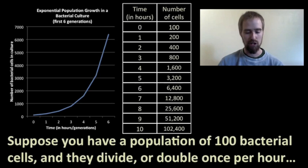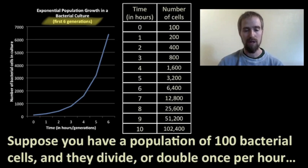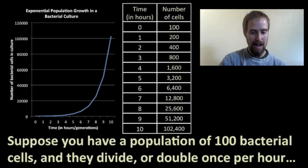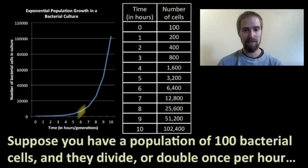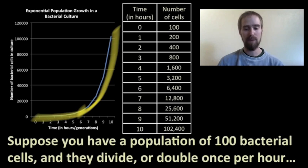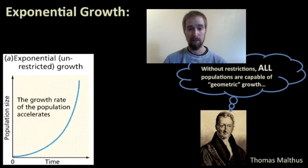Let's look at a graph of how this looks. The graph shows only the first six generations of population growth in this jar of bacteria. If we let that go all the way to the end of those 10 generations, look at what kind of increase we're looking at — keeping in mind that this is where we left off in our last graph. This pattern of growth, characterized by the J-shaped curve that we see on this graph, is what we call exponential population growth. All populations are capable of exponential growth if left to grow without any restrictions.